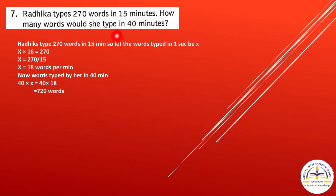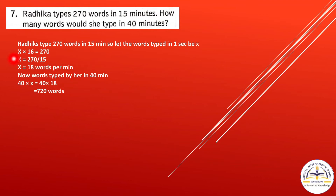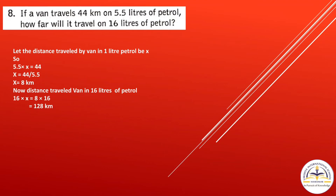Let the words typed per minute be x. So x times 15 equals 270, then 270 divided by 15 gives x equals 18 words per minute. To find words typed in 40 minutes, multiply 40 by 18, which gives 720 words she can type in 40 minutes.